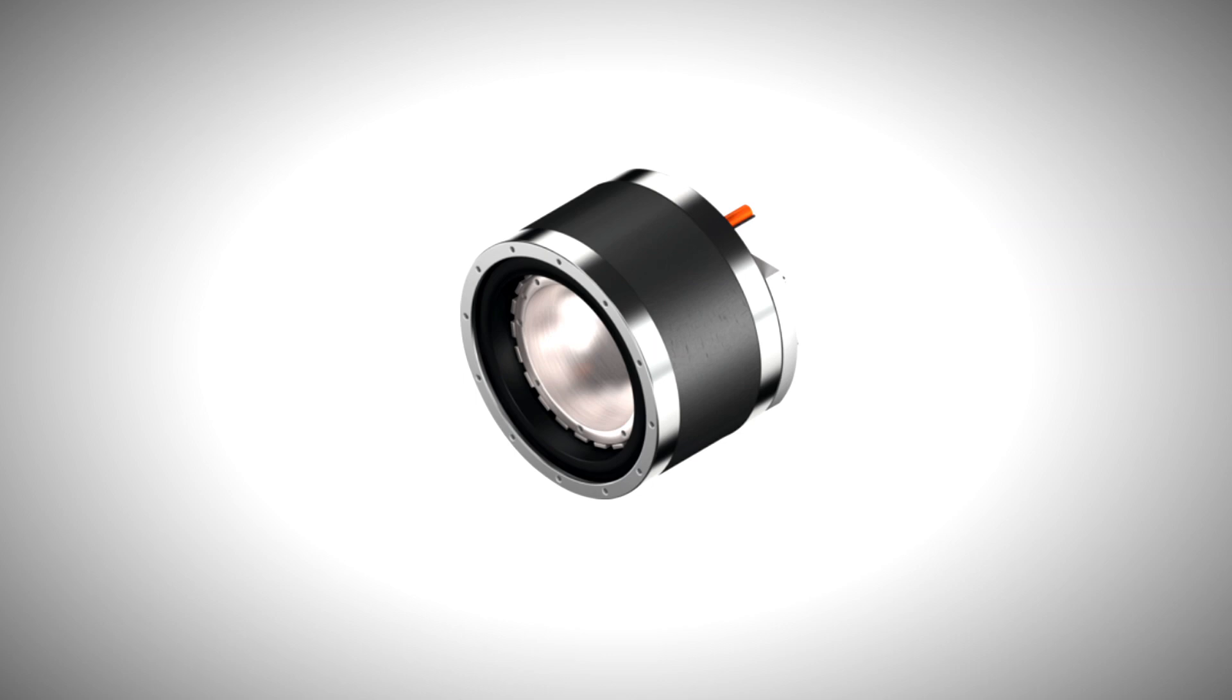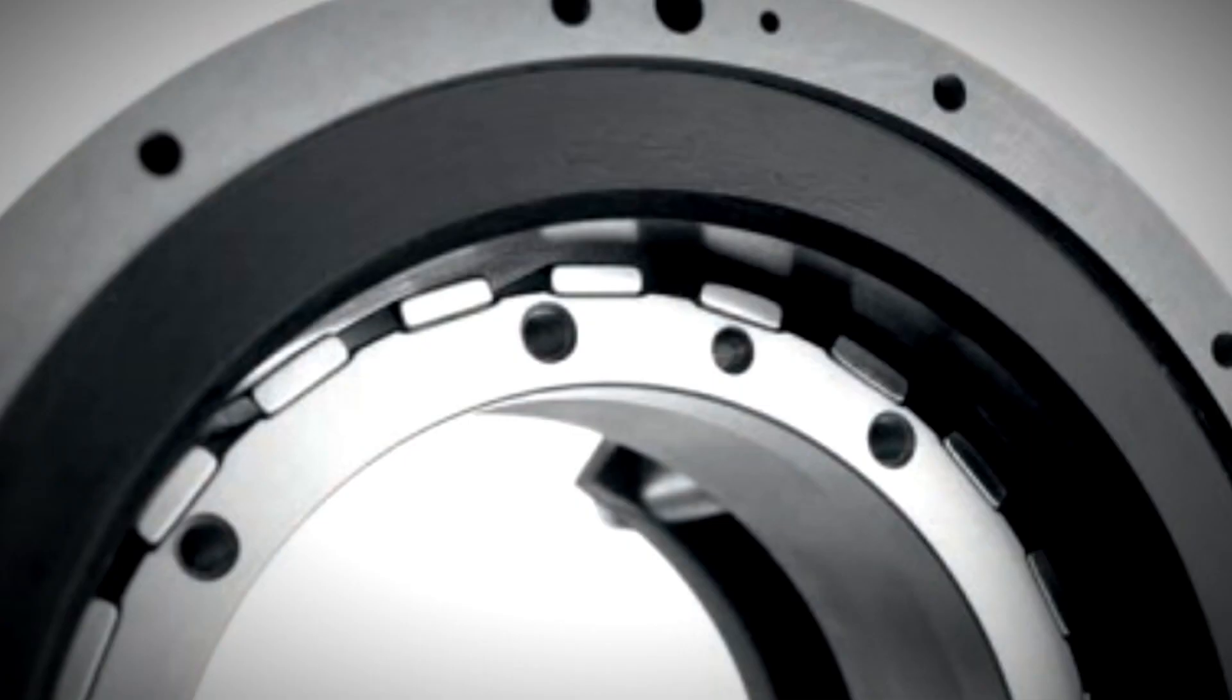Direct drive motors usually have many poles. This lets them output high torque at no or low speed, usually slower than 1000 rpm.